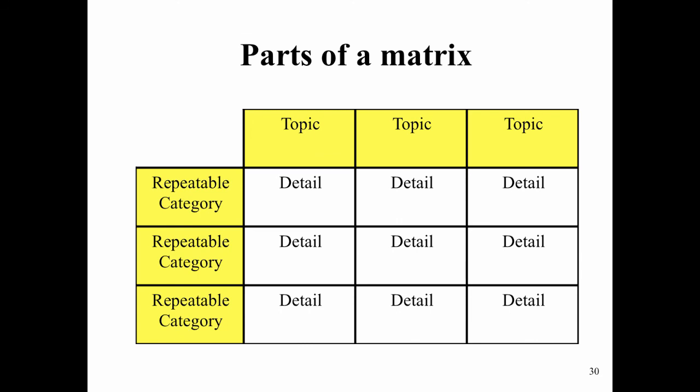Matrices are great for comparing and contrasting. All hierarchies and sequences can be extended downward to form a matrix. Matrices have three parts: topics, repeatable categories, and details. Topics appear across the top of the matrix. They are the superordinate or subordinate ideas in a hierarchy, or the steps in a sequence. The repeatable categories appear down the left margin. They are the characteristics by which the topics are compared and are what differentiate a matrix from a hierarchy or sequence. They are called repeatable categories because each category is repeated for each topic and allows for comparison across topics.